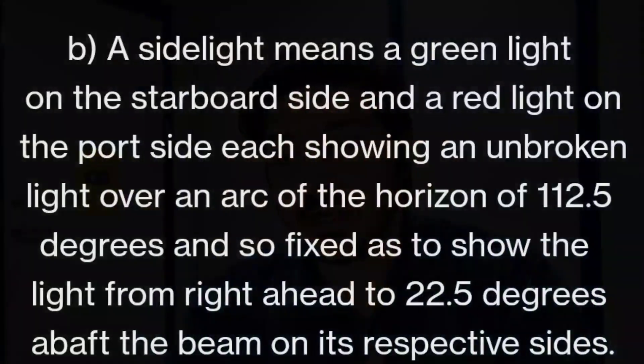Part B is about sidelights. A sidelight means a green light on the starboard side and a red light on the port side, each showing an unbroken light over an arc of horizon of 112.5 degrees, fixed to show the light from right ahead to 22.5 degrees abaft the beam on its respective side. So the color is red on port, green on starboard, and those are also their positions.